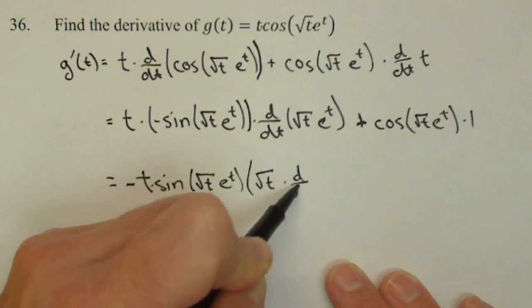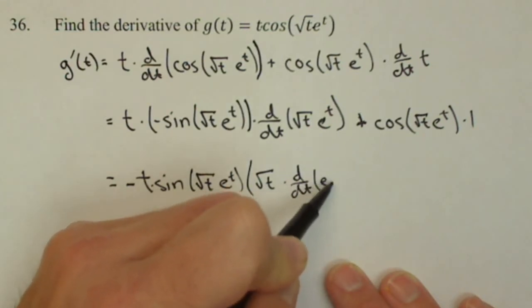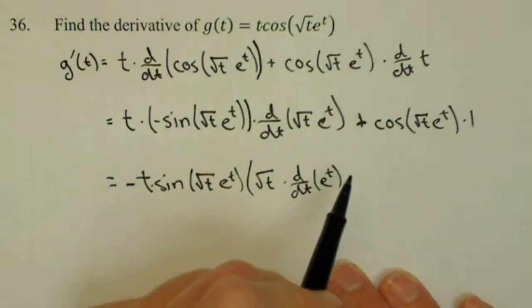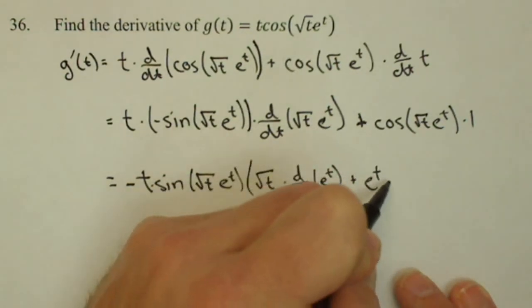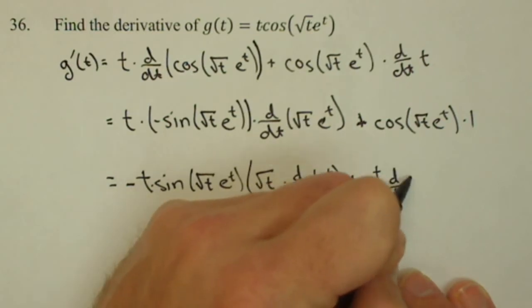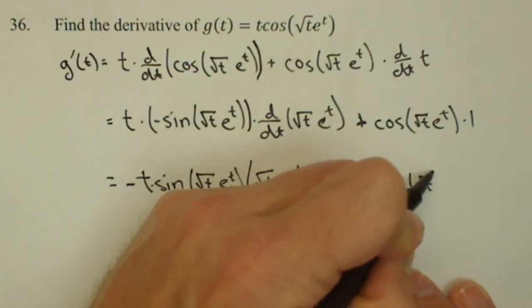Let's stick with the notation we've been using. Derivative with respect to t of e to the t. You don't necessarily have to write all these steps. I just want to make it really obvious where everything's coming from. e to the t times the derivative with respect to t of square root of t.